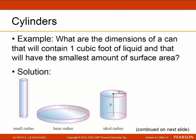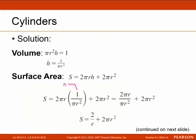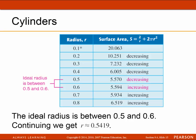Here's another example: what are the dimensions of a can that will contain one cubic foot of liquid and have the smallest possible surface area? The solution sets pi r squared h equal to 1, so height equals 1 divided by pi r squared. Substituting into the surface area formula gives surface area equal to 2 divided by r plus 2 pi r squared. The ideal radius is between 0.5 and 0.6, giving approximately r equals 0.5419.